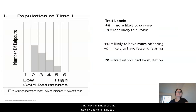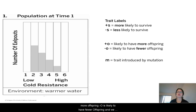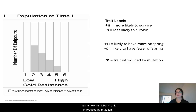Just a reminder of trait labels: plus S means more likely to survive, minus S means less likely to survive, plus O means likely to have more offspring, and minus O means likely to have fewer offspring. And we have a new trait label — M — which means a trait introduced by mutation.